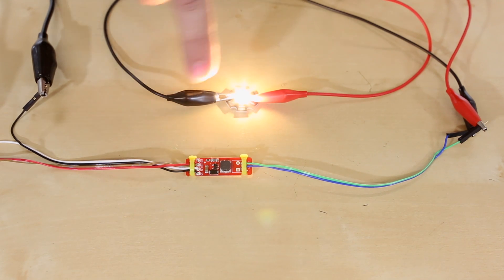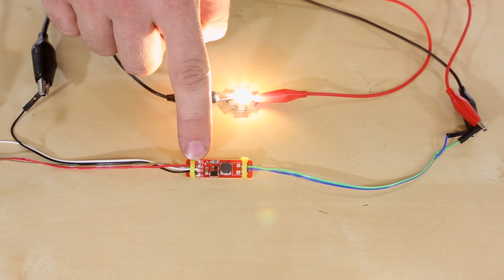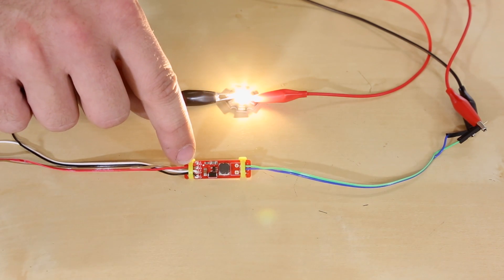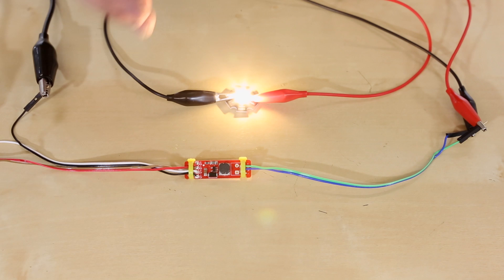Now if you wanted to dim this, you can connect a PWM signal or an analog voltage to these two pins right here. These are the dimming pins. And as long as you're supplying a voltage between half a volt and two and a half volts, it will dim the LED accordingly from zero to 100% brightness.